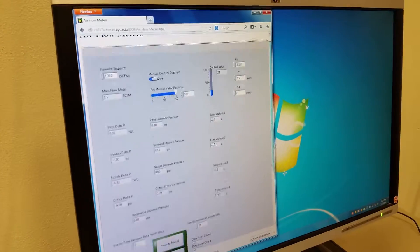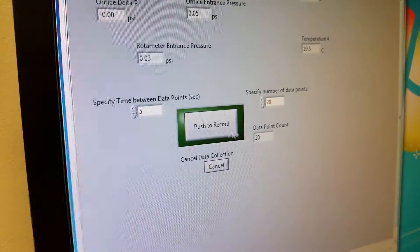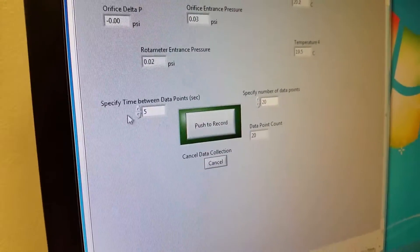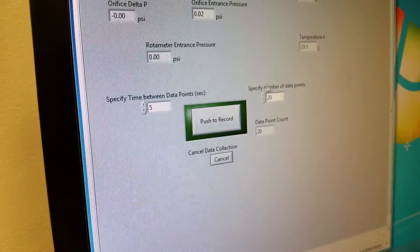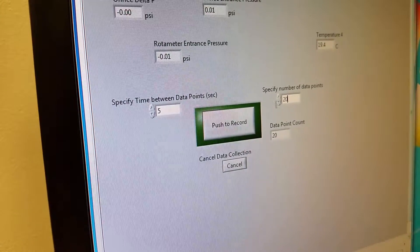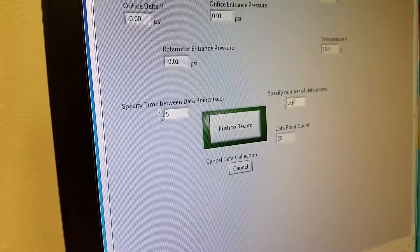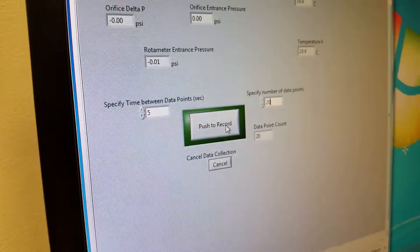The final thing that we're going to take a look at is down here. You've got specify time between data points and specify number of data points. So this is going to be the time lapse in between each of the readings that are made and how many data points you're going to put together to obtain a single data point. Don't be confused. You're not getting 20 different data points. You're getting 20 data points that converge into a single data point. You're going to push to record.